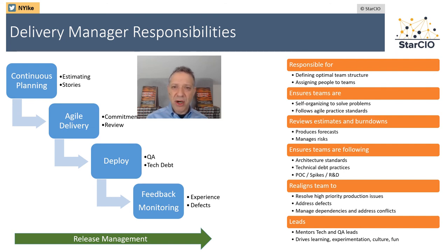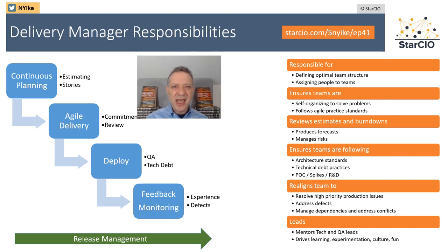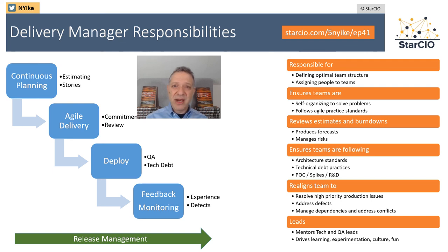It's obviously a very important role. I like to call it the CTO for a channel of work, often working with between two and as many as six teams, but often around three or four. This is how you scale the culture and practices of an Agile organization. Thank you for watching this episode of 5 Minutes with NY Ike. You can sign up for the newsletter at starcio.com/5NYIke/EP41. I hope you'll subscribe to the channel. We have more content coming this quarter around roles and teams in Agile. Have a great day.